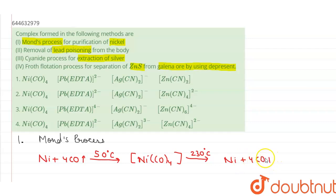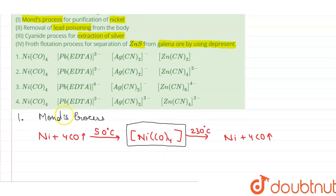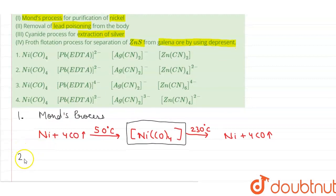At 230 degrees Celsius gives nickel plus four carbon monoxide. So the complex formed over here is nickel tetracarbonyl in the first reaction.